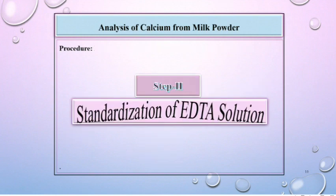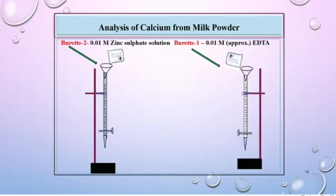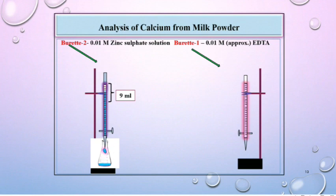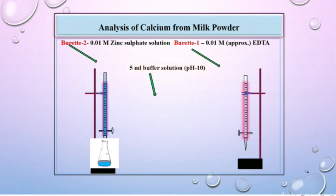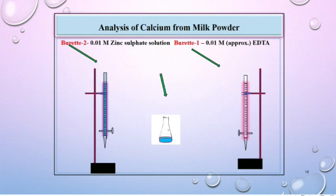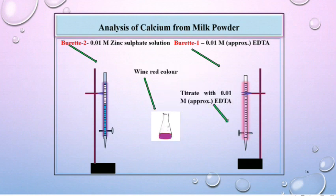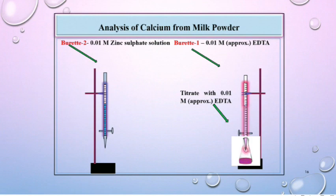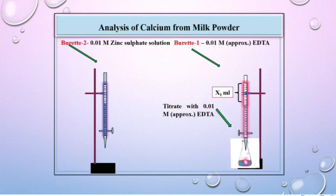Step 2 is standardization of EDTA solution. Fill burette No. 2 with 0.01 molar zinc sulfate solution and burette No. 1 with 0.01 molar EDTA solution. Now take 0.01 molar zinc sulfate solution in a conical flask. To this solution add 5 ml buffer solution of pH 10, then add 2 to 3 drops of eriochrome black T indicator. The color of the solution will change to wine red. Now titrate this solution with 0.01 molar EDTA solution. Add the solution with constant stirring till a blue color appears. Record this reading as X1 ml.